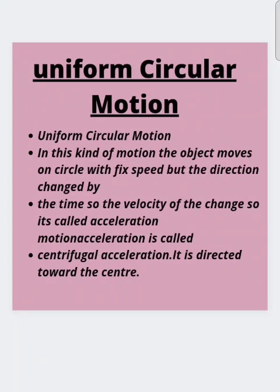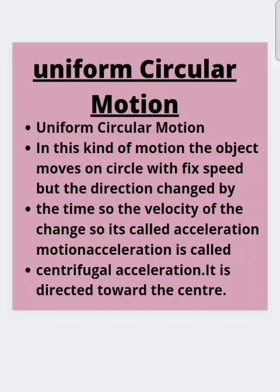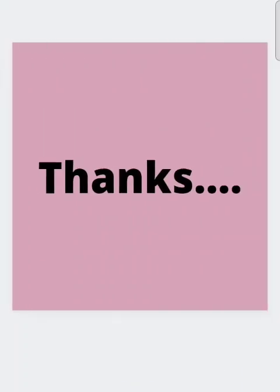Uniform circular motion is when an object moves on a circle with fixed speed, but the direction changes over time. The change in velocity is called acceleration — specifically, centripetal acceleration — and it is directed towards the center. That concludes this chapter. I hope you liked it and understood it well. Thanks and have a nice day, bye!